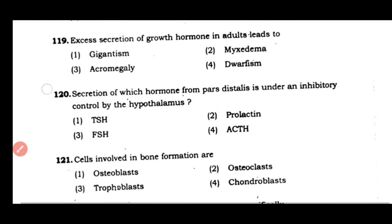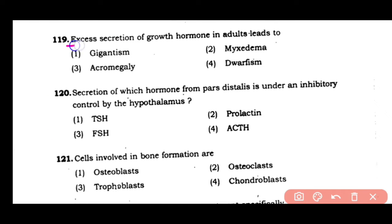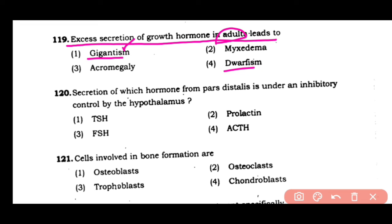Question number 119: Excess secretion of growth hormone in adults leads to — (1) gigantism, (2) myxedema, (3) acromegaly, (4) dwarfism. The correct answer is option 1. Excessive secretion of growth hormone in adults leads to gigantism, while undersecretion causes dwarfism, and oversecretion after adolescence in adults causes acromegaly.